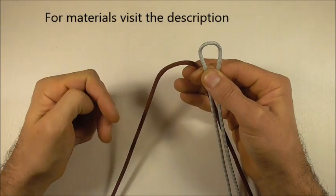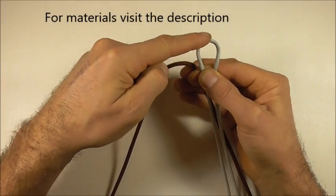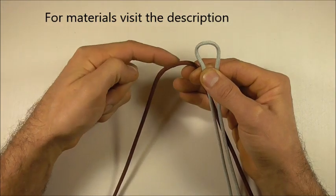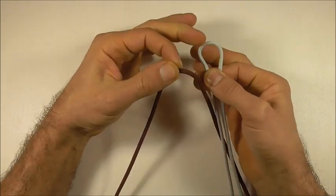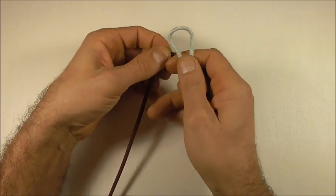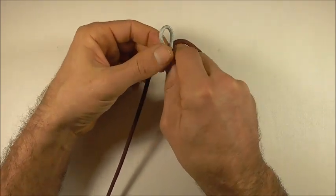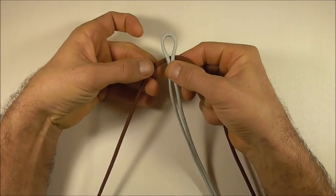We're going to have two lengths of paracord. This one here will be the shorter one and this is the longer one. Start off just by finding the centre of each piece and then lay the short one on top of the longer piece.